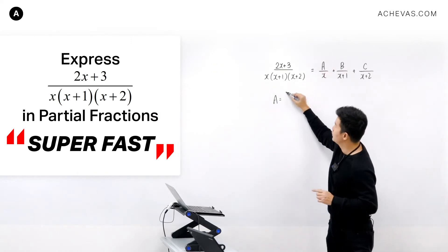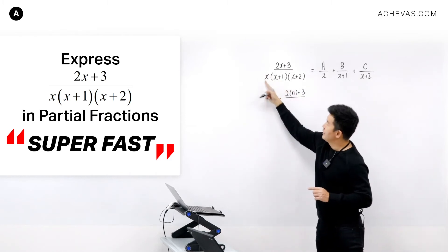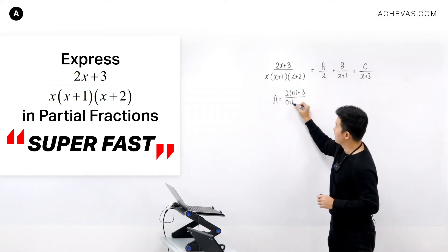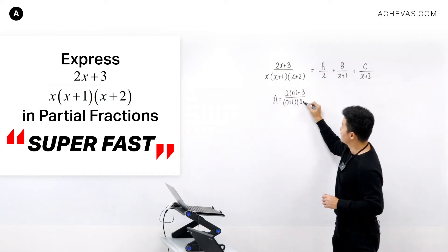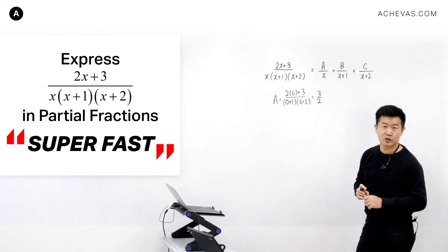So A is going to be equal to 2 times 0 plus 3 divided by, ignoring X because it appears as a denominator in A, 0 plus 1 multiplied by 0 plus 2. And this will immediately give you A. It is equal to 3 over 2.